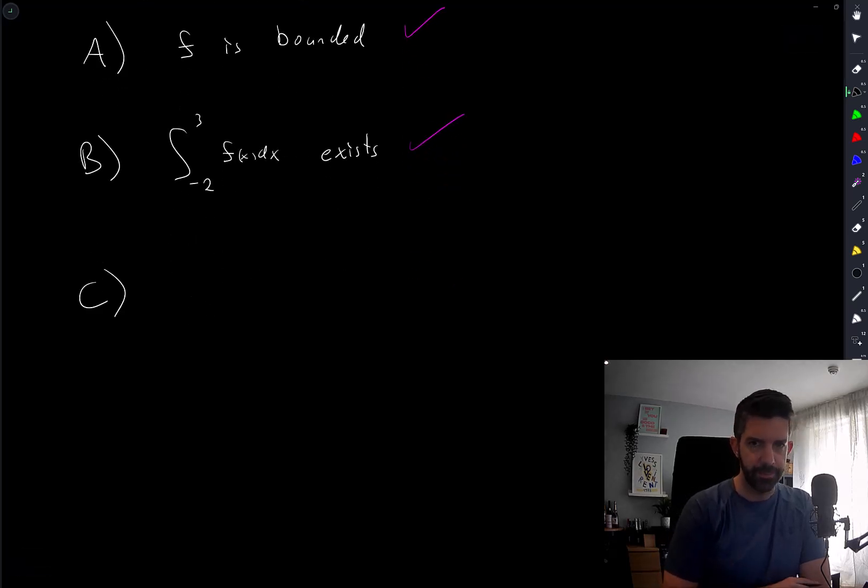Option C. For each C between f of negative 2 and f of 3, there is an x from between negative 2 and 3, such that f of x equals c.